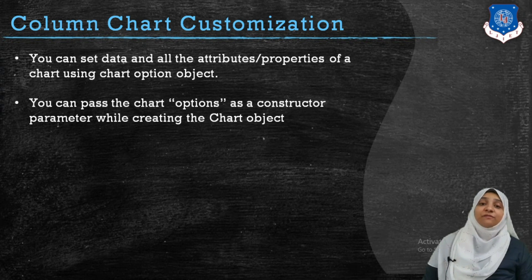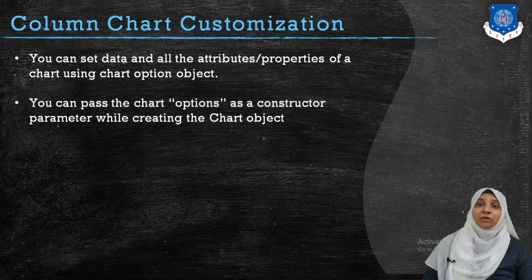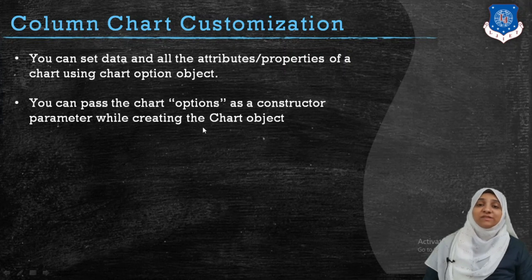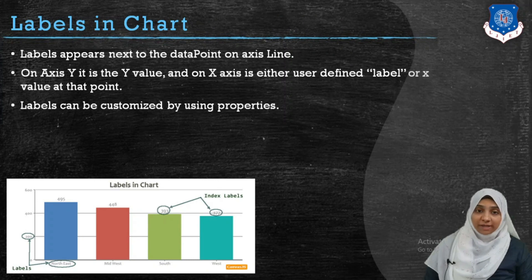Chart objects are nothing but the parts of the chart. For example, the label of an axis — x-axis label, y-axis label — the values appearing over the y-axis can be formatted, the chart title can be displayed above or below the chart, towards the left, center, or right. All these things are set by passing properties as options in the constructor while creating the chart object.